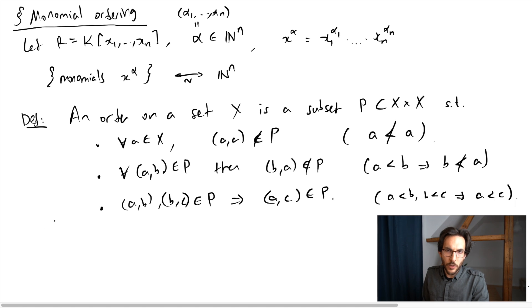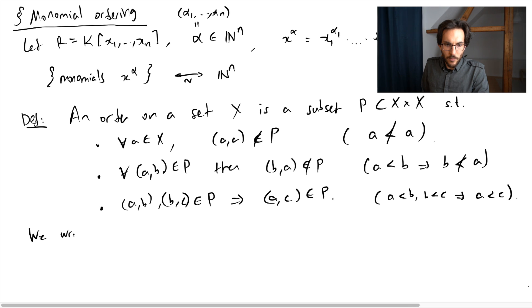Once we choose an ordering, we typically write a less than b if (a,b) is inside of P, and a less than or equal to b if a is less than b or a equals b. So far so good.